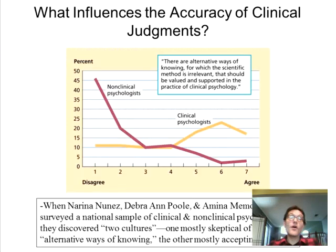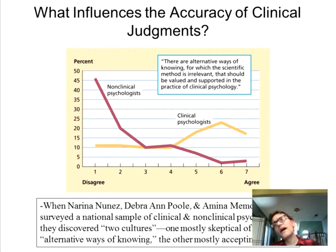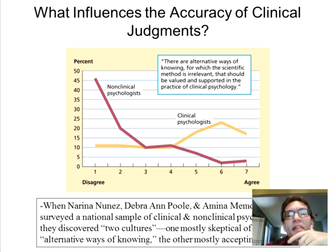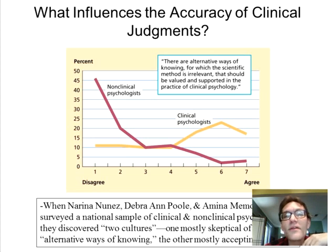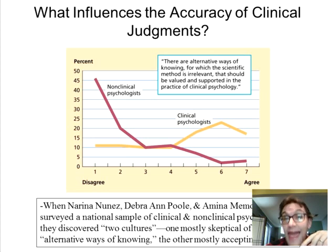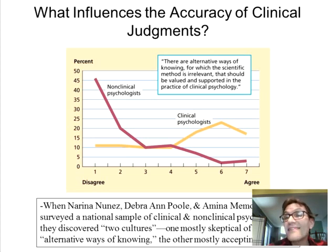This graph is somewhat alarming. Researchers classified psychologists as either clinical or non-clinical, then asked them whether there are alternative ways of knowing for which the scientific method is irrelevant, that should be valued in clinical psychology. The non-clinical psychologists essentially said 'absolutely not' — look at the left side, they completely disagreed, with very few expressing any support for that statement.